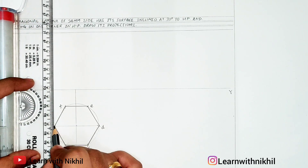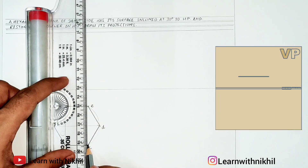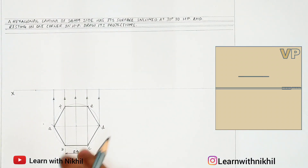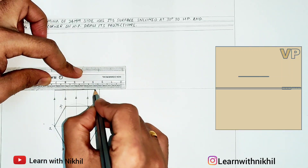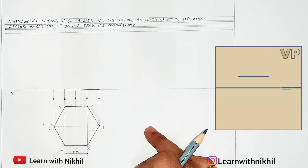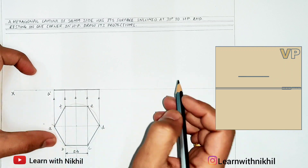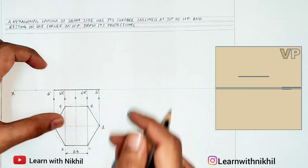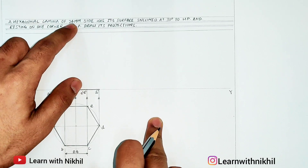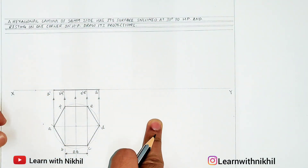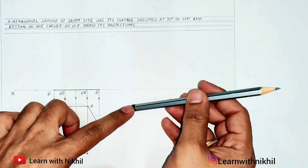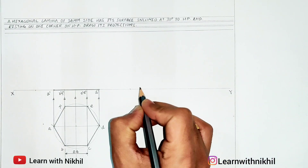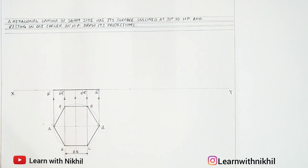Now take the projections of these edges upward towards the front view, that is towards the vertical plane. The front view projection will be a straight dark line. The intersection points are labeled: A′, B′F′, C′E′, and D′. This is the front view. Since the lamina is inclined to the HP at 30 degrees, this inclination will be visible in the front view on the vertical plane side.